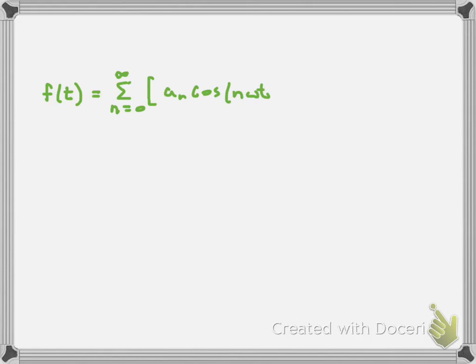So f(t) is equal to the sum from n equals 0 to infinity of a coefficient a_n times cosine(nωt), plus b_n times sine(nωt). This expression is the Fourier series.